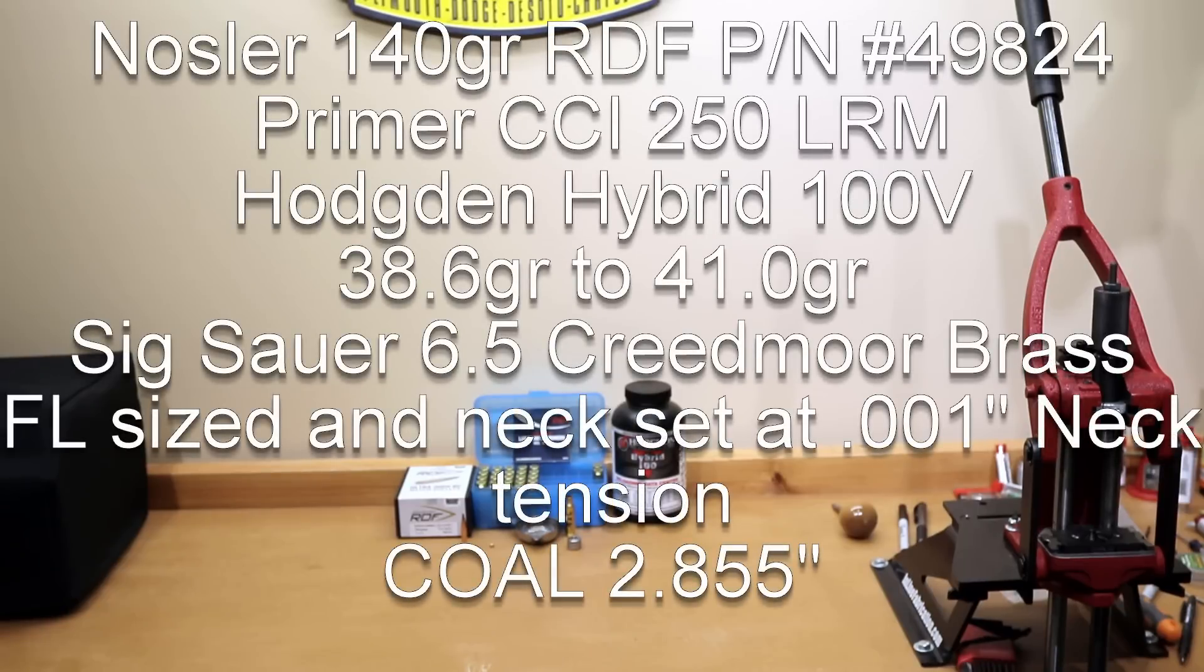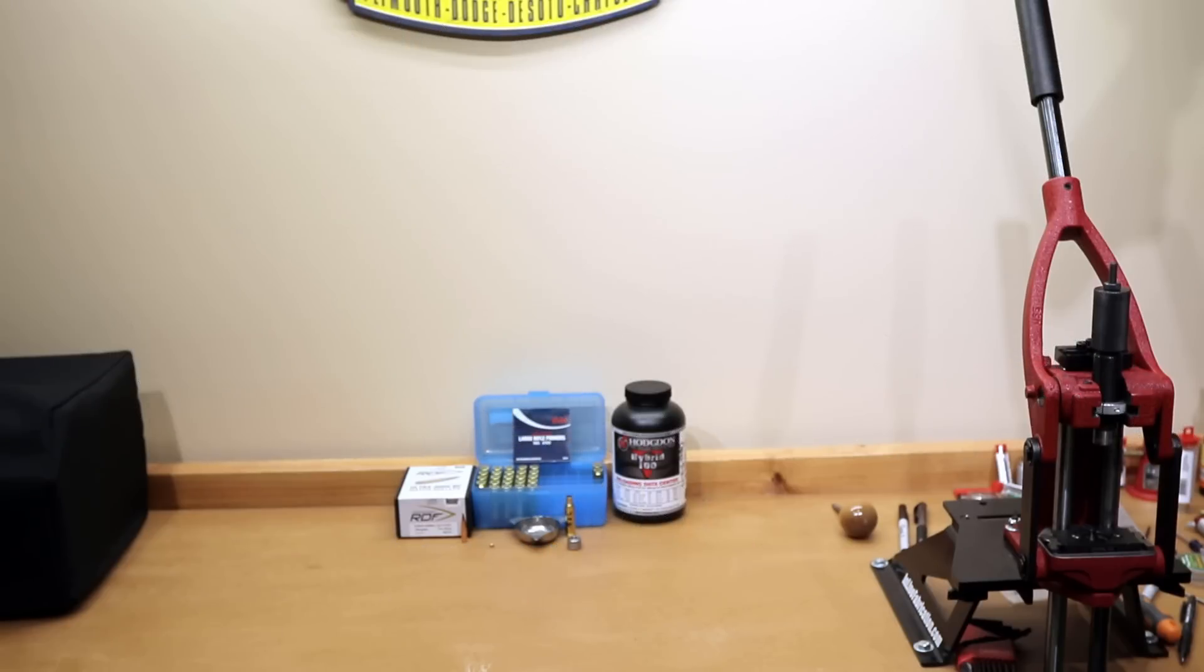We're going to be using the Nosler RDF part number 49824. We're using CCI-250 Large Rifle Magnum Primers. Like I mentioned, the powder we're using is Hodgdon's Hybrid 100V. The brass we're using is brand new Sig 6.5 Creedmoor brass. We full length sized it. We set the neck tension at 1,000th with our Sinclair Precision Mandrels. The cartridge overall length that we loaded to was 2.855 inches, and today's testing was actually performed at a density altitude of 917 feet. So guys, that out of the way, this is kind of what we ended up with.